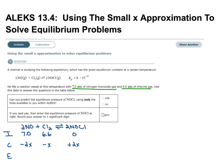For equilibrium, we're just adding the initial plus the change. The next thing we want to do is set up our equilibrium constant expression. Remember, Kp equals the pressure of the products raised to the power of the coefficient over the pressure of the reactants raised to the power of the coefficient. Now I have my expression and I'll plug in the numbers.